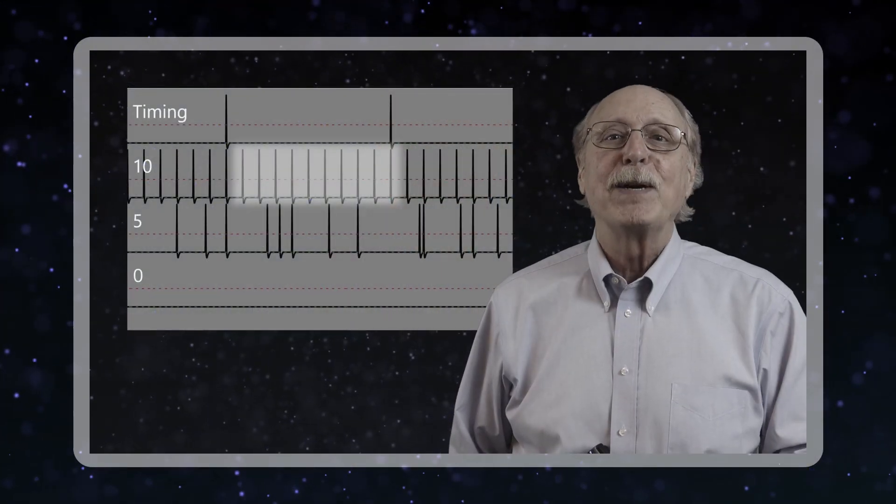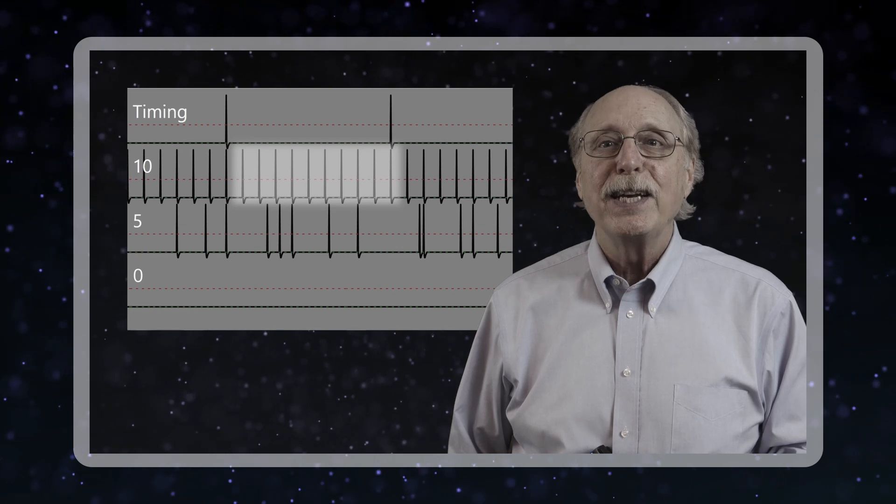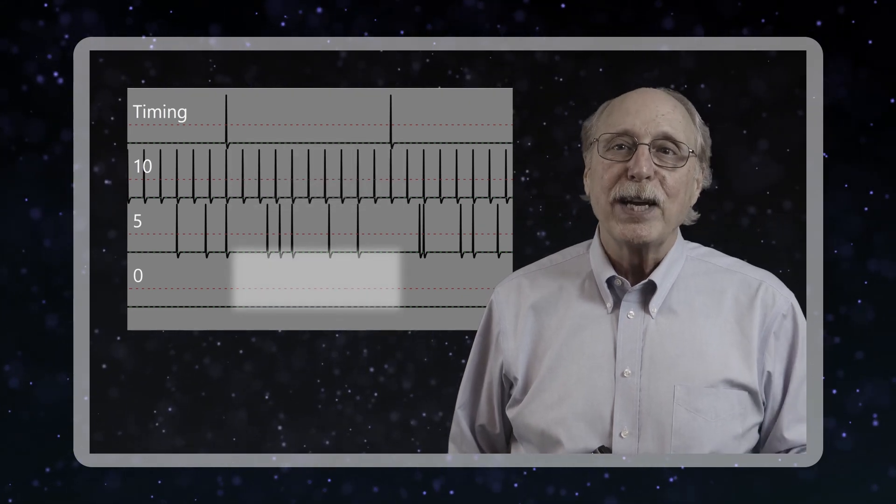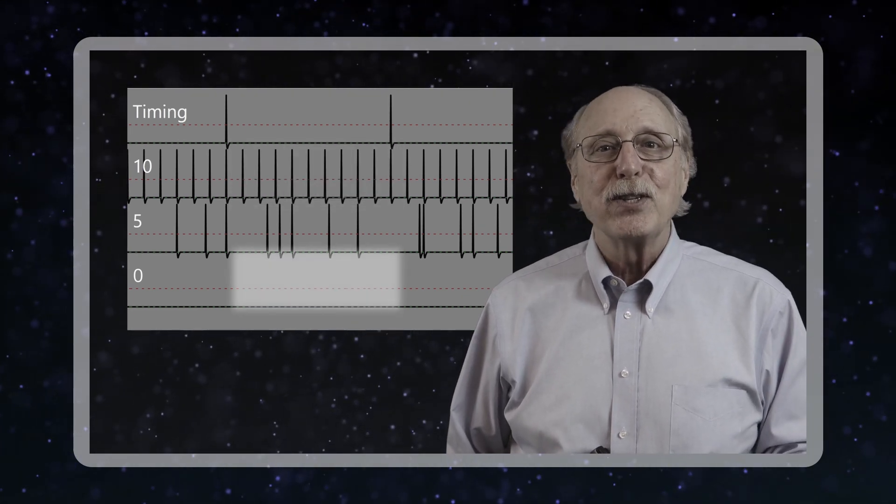In the previous video, we demonstrated how it is impractical to represent numerical values in neurons with precision. Here in Part 5 of this series, we cover why biological neurons can't do the most fundamental process of the artificial perceptron: the summation of inputs.